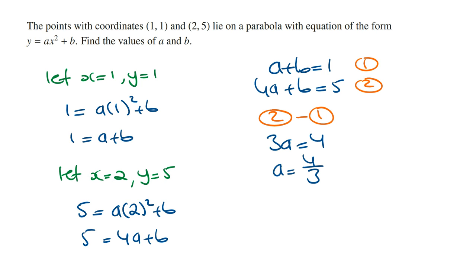To solve for b, we need to sub in a = 4/3 into either the first equation or the second equation. Using the first one is going to be easier. So we can say that 4/3 + b equals 1, which means that b is going to be 1 - 4/3. 1 - 4/3 is the same as 3/3 - 4/3, and so this is going to be -1/3.